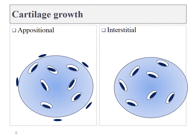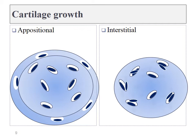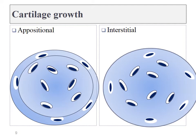Cartilage can grow one of two ways. Appositional growth means adding an extra layer to the surface of the tissue, whereas interstitial growth means growing from the inside and pushing things outward.